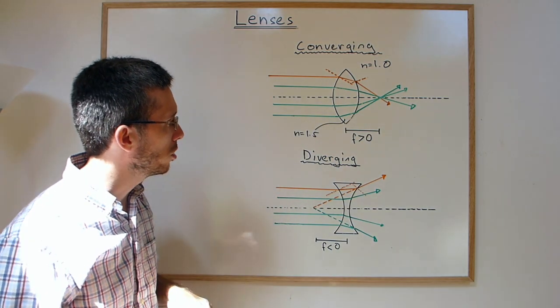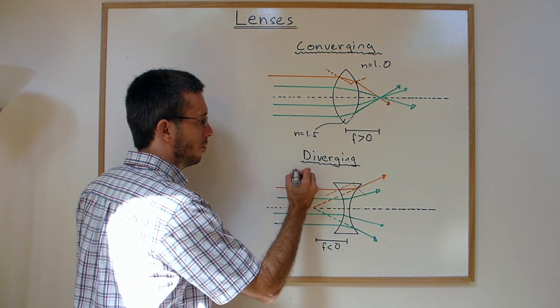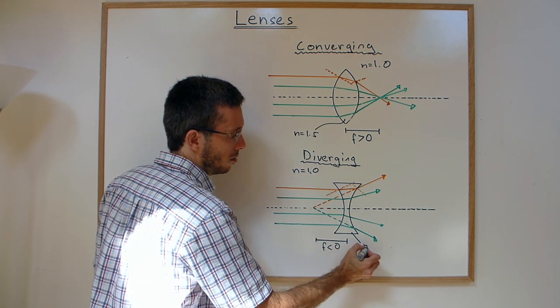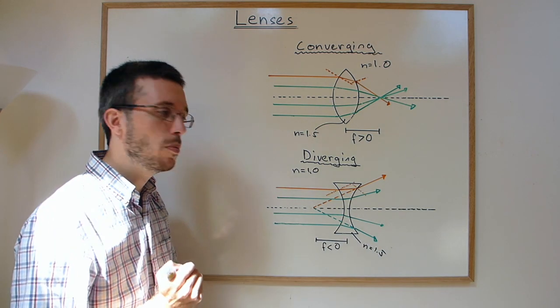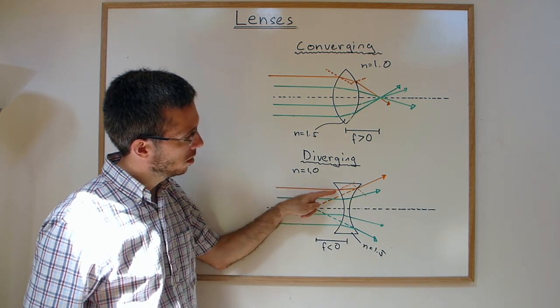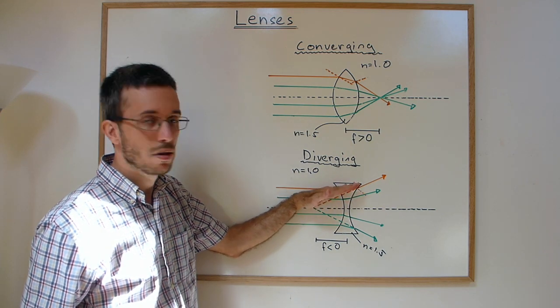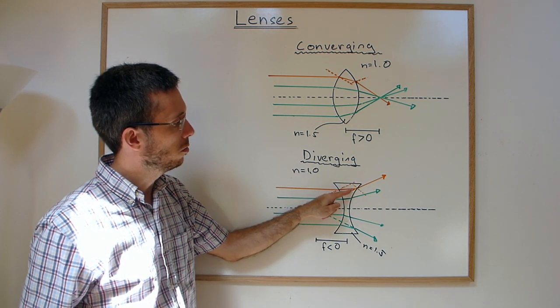On the diverging lens, with air on the outside and glass on the inside, when you're hitting the first surface, again the ray bends towards the normal, so a bit upwards.